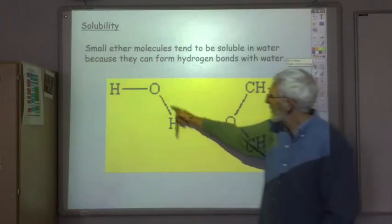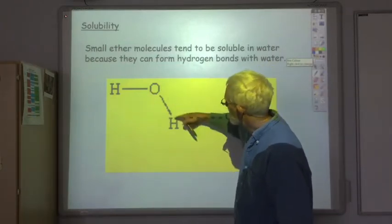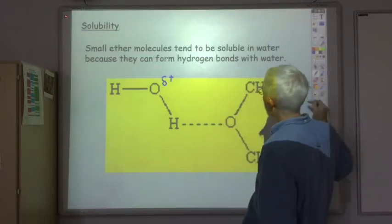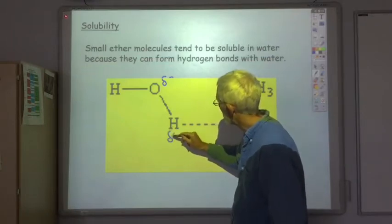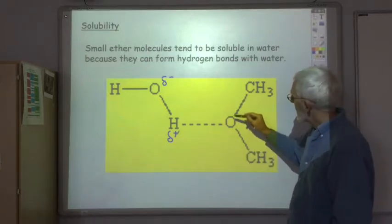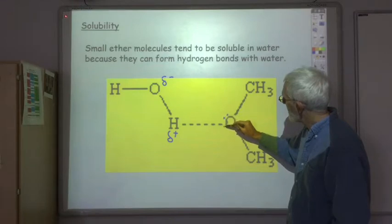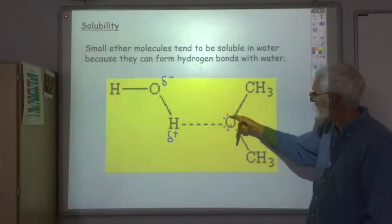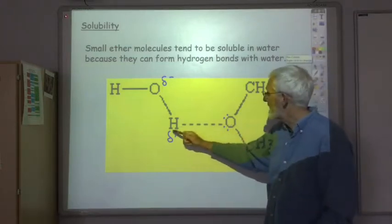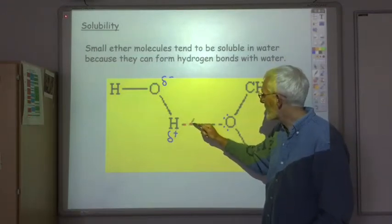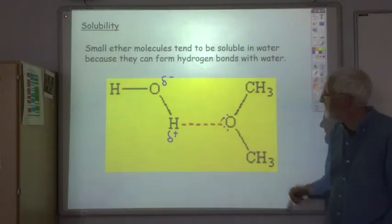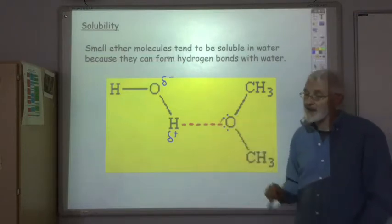So here's our water molecule and OH bonds are very polar. The oxygen being negative and the hydrogen being slightly positive. Now obviously you've got the lone pairs on this oxygen and this is quite electronegative, so this bonding here, this attraction between the positive end of the water molecule and the electronegative oxygen atom in the ether chain is known as hydrogen bonding.